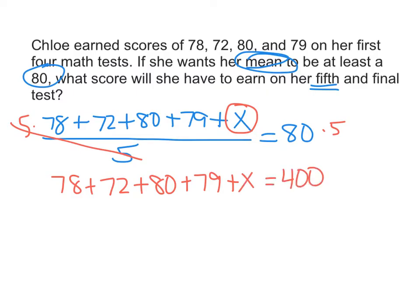And then the next step, I'm going to combine my like terms here. So I'm going to add those numbers up, 78 plus 72 plus 80 plus 79. And when you do that, you get 309 plus X equals 400.